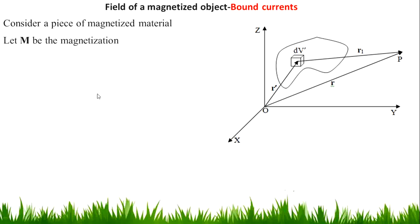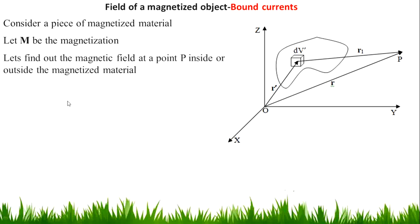This magnetization is due to the external field, which we are not going to discuss. But the effect of the external field is what we are going to discuss. Due to this external field the material is magnetized; that magnetization is capital M. Let's find out the magnetic field at a point P inside or outside the magnetic material. Due to this external field the material is magnetized, so some field will be produced. We are going to find the magnetic field at a point P, which is at a distance r1 from the small element dv dash, and the position vector of capital P is R.